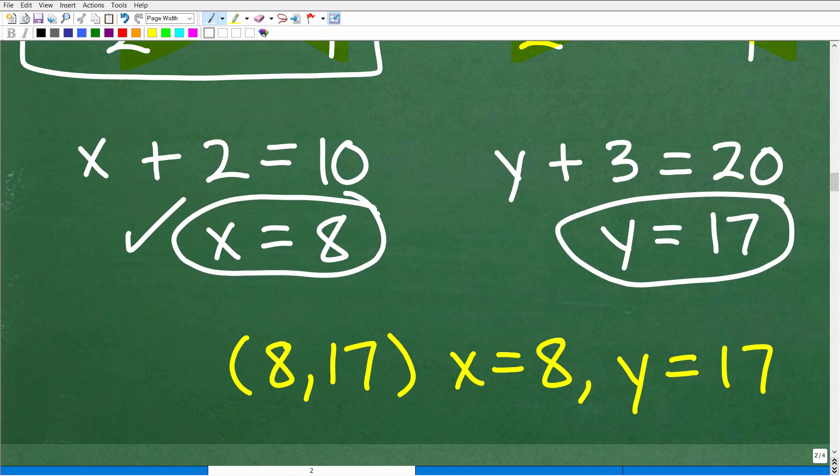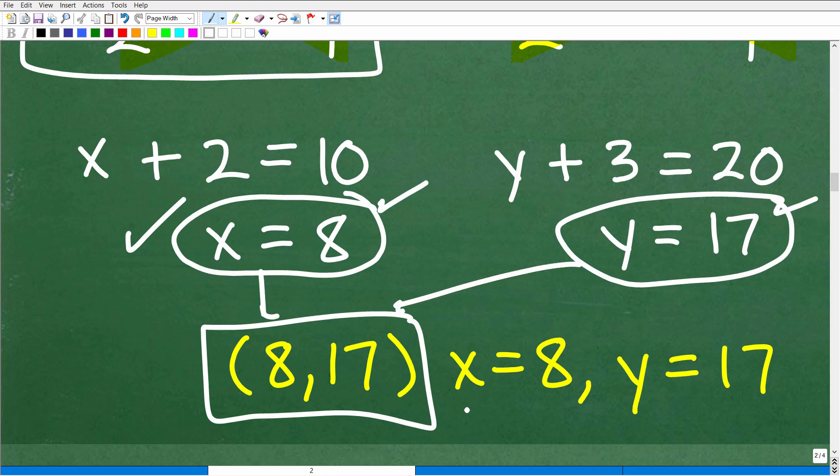Remember, x is 8 and y is equal to 17. But what does that represent? Well, it represents the ordered pair, the x, y ordered pair, 8, 17. So again, x is 8, and y is equal to 17. There you go.